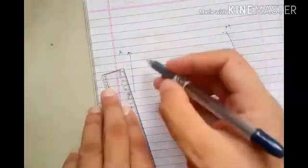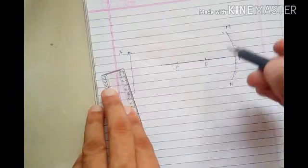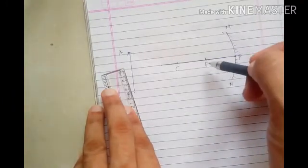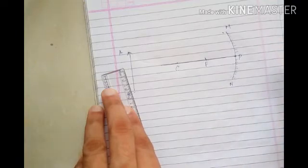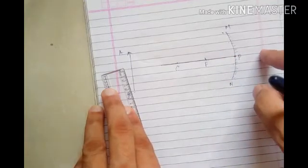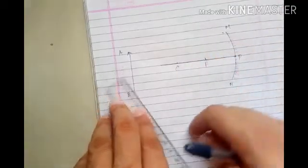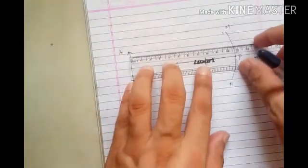Now, why do we draw ray diagrams? Just to know where the image is formed, whether it is small, whether it is big, whether it is the same size as the object, and so on. We find this out using ray diagrams.